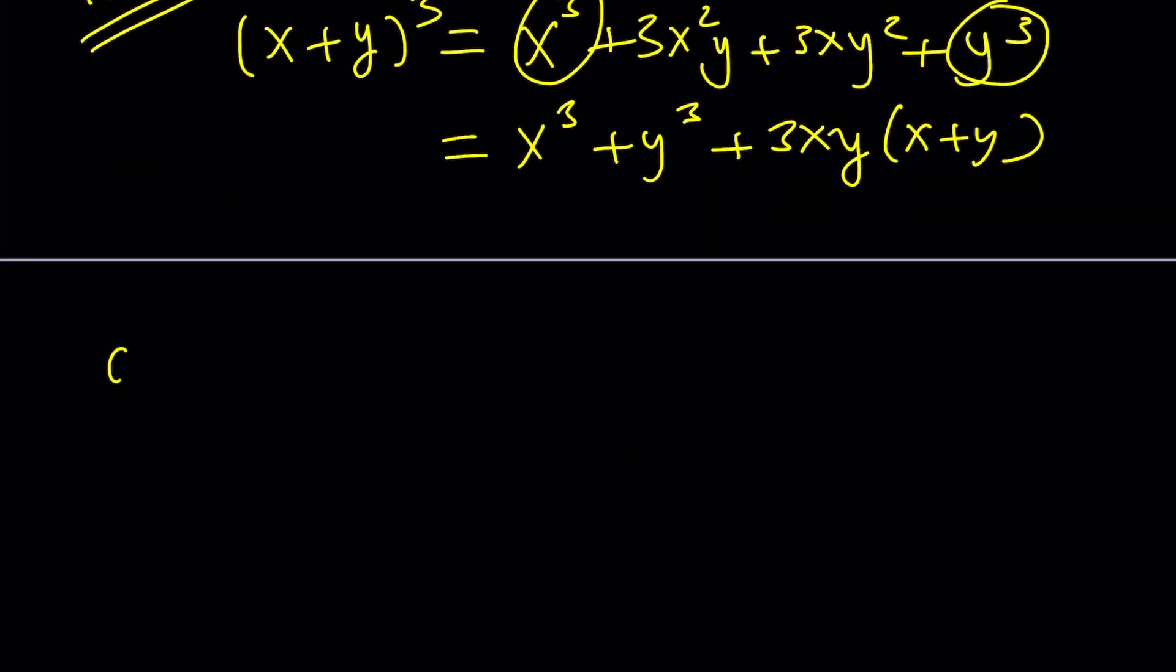Let's go ahead and expand a plus bi to the third power. x is this one and y is this one. Now, let's go ahead and expand it. x cubed or a cubed plus y cubed, that's going to be b cubed i cubed. First of all, I'm going to write everything and then simplify.